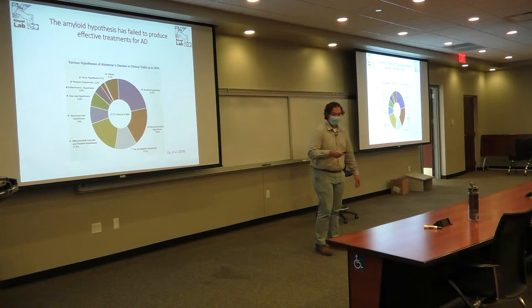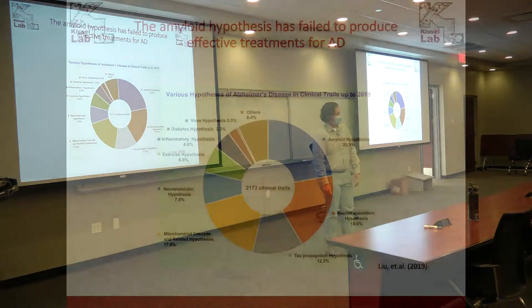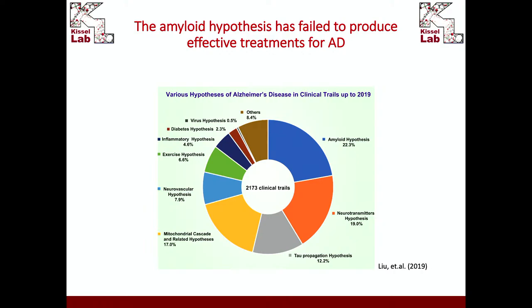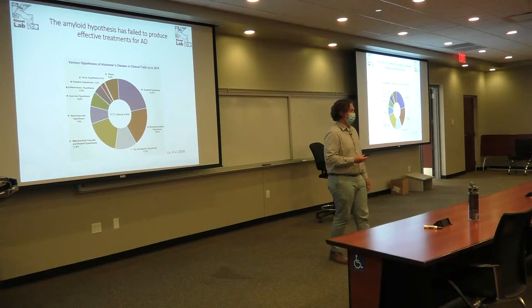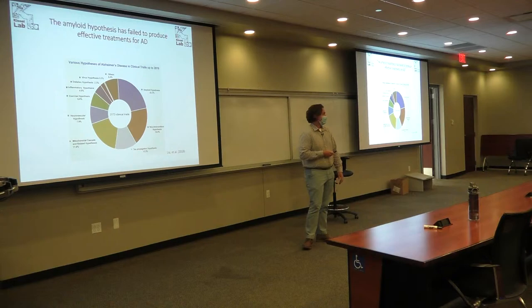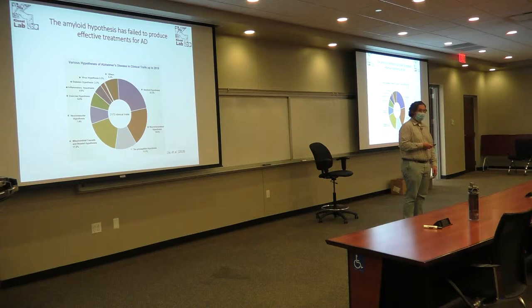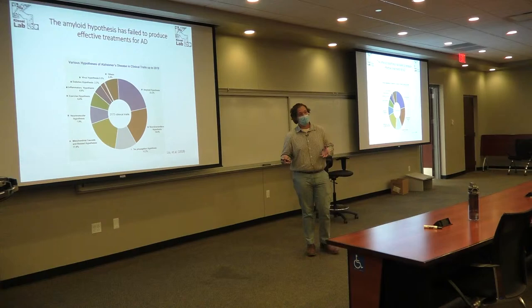If you look at the wheel of hypotheses, each color represents a different hypothesis for how this disease occurs — which tells you immediately that people don't really understand this disease super well. A lot of attention has been paid to the amyloid hypothesis based on amyloid plaque formation, which has just recently been considered debunked. Eli Lilly spent millions on an amyloid drug that failed in clinical trials, which ruined a lot of people's careers who spent 30 years working on that theory.